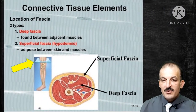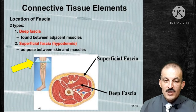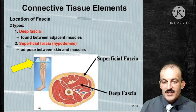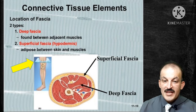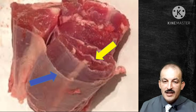This slide shows the location of the fascia. Superficial fascia, or hypodermis, is the adipose tissue present between skin and muscles, while deep fascia is found between adjacent muscles. Another picture shows superficial fascia indicated by the blue arrow and deep fascia indicated by the yellow pointer.